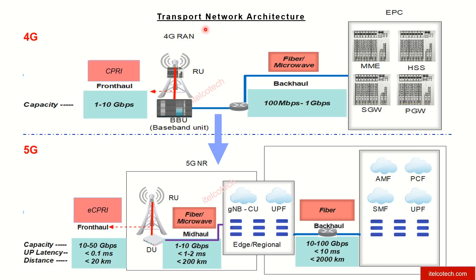Let's understand the transport network architecture. Here we are comparing the transport network connectivity between 4G and how it looks in 5G. We have a connectivity between the baseband unit and the radio unit, which is also termed as fronthaul. The fronthaul in 4G is provided by a protocol called CPRI, which is a Common Public Radio Interface.